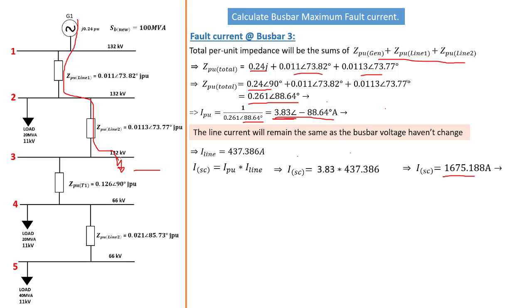That gives us a total short circuit current of 1675.118 amps. This is the current available at this point — if something causes a short circuit, instead of following the normal path it takes a shortcut straight to earth. That magnitude is 1.6 kilo amps. We can also calculate the total short circuit MVA using the apparent power formula, replacing the current, which gives us a value of 383 mega volt-amperes as the prospective short circuit MVA.